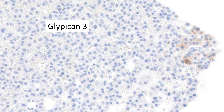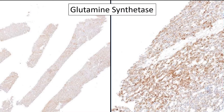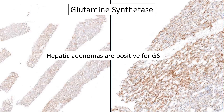The glypican-3 was essentially negative, except for a tiny area — this is negative in my book, no help there. But here's glutamine synthetase: it's diffusely positive. Now that is concerning for HCC, but remember that hepatic adenomas can also be positive for glutamine synthetase. So take that with two pinches of salt.